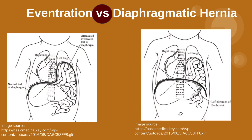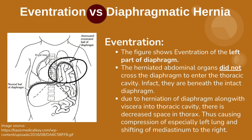Eventration versus Diaphragmatic Hernia. First, we will discuss Eventration. The figure shows eventration of the left part of diaphragm. The herniated abdominal organs did not cross the diaphragm to enter the thoracic cavity. In fact, they are beneath the intact diaphragm. Due to herniation of diaphragm along with viscera into the thoracic cavity, there is decreased space in the thorax, thus causing compression of especially the left lung and shifting of mediastinum to the right.